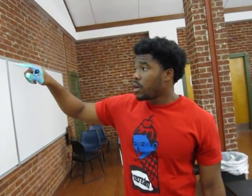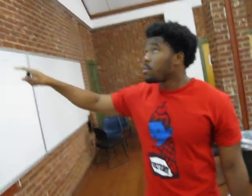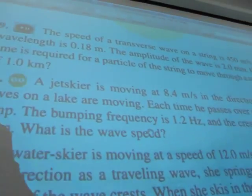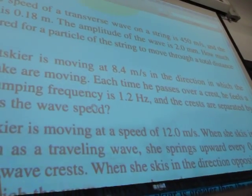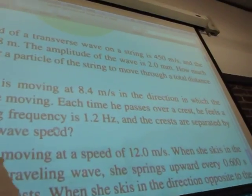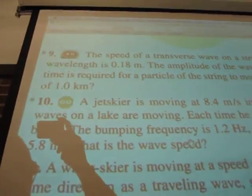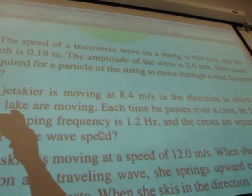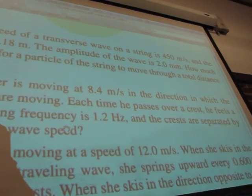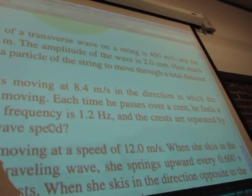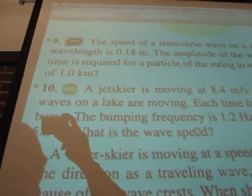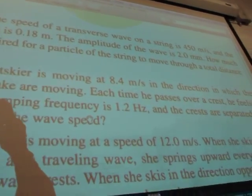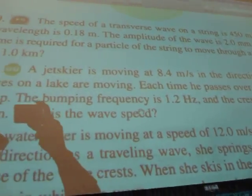Okay, so here we're working on Chapter 16, Problem 9. The speed of a transverse wave on the string is 450 meters per second, and the wavelength is 0.18 meters. The amplitude of the wave is 2.0 millimeters. How much time is required for a particle of the string to move through a total distance of one kilometer?